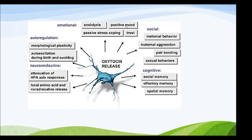Oxytocin release is based on several different factors: emotional, social, cognitive, neuroendocrine, and auto-regulation. The emotional factors involved in oxytocin release include anxiolysis, positive mood, passive stress coping, and trust.